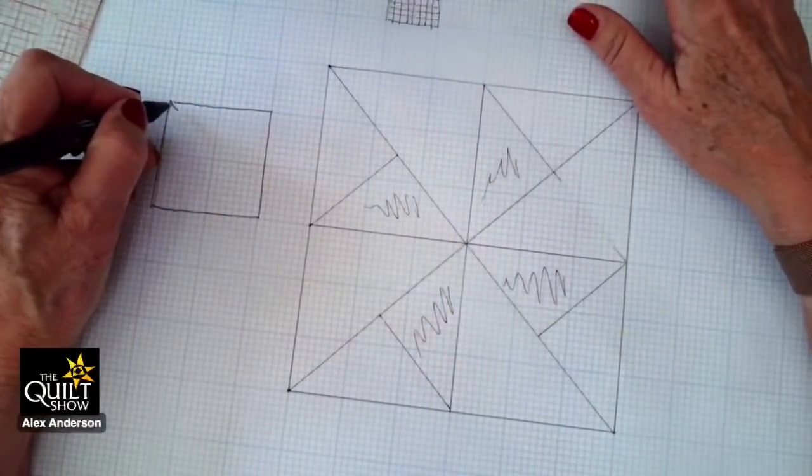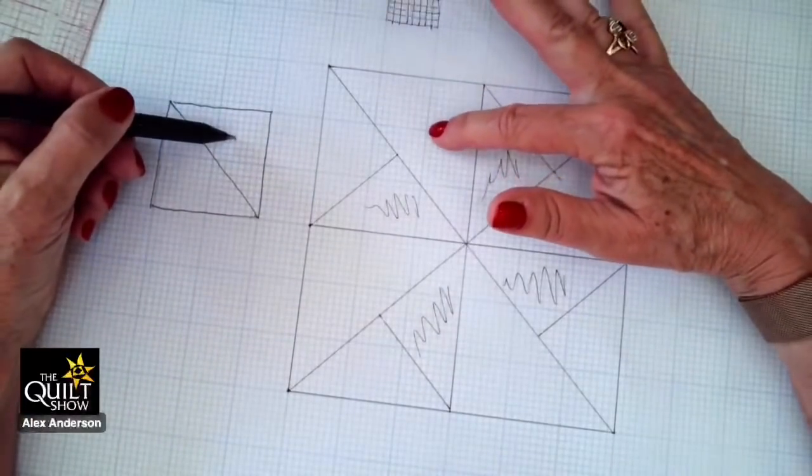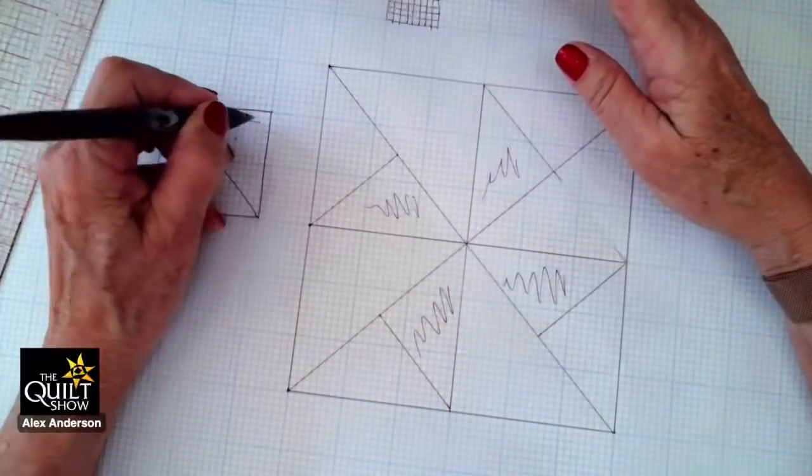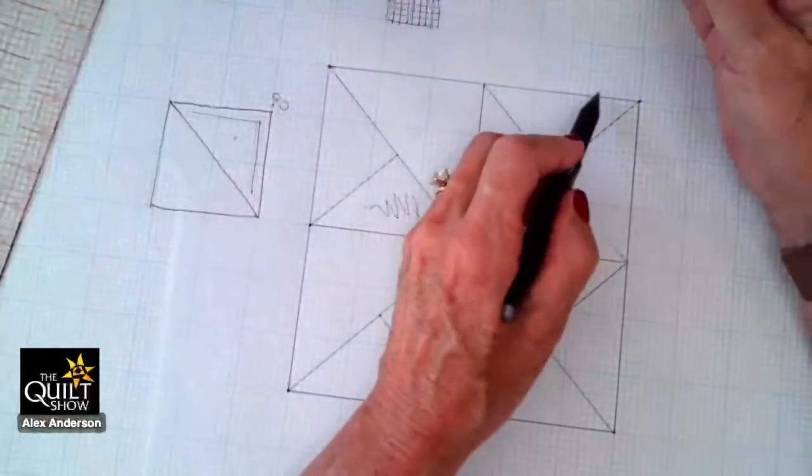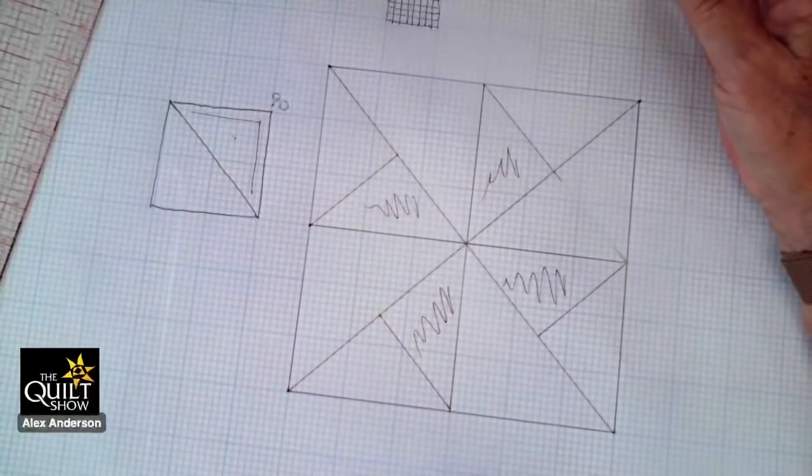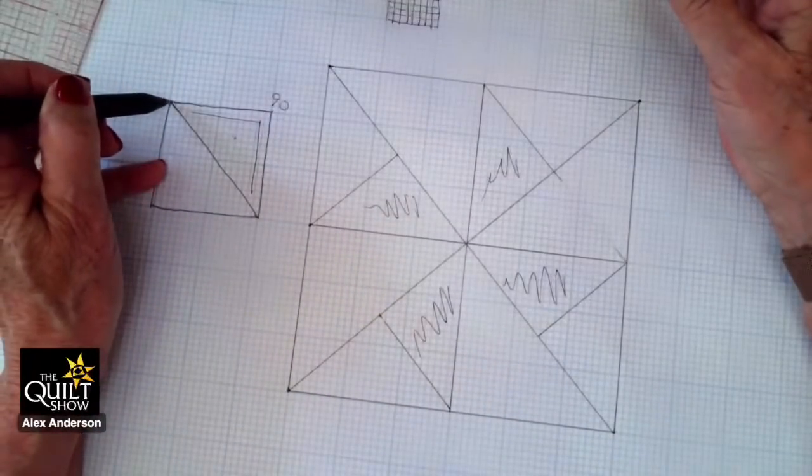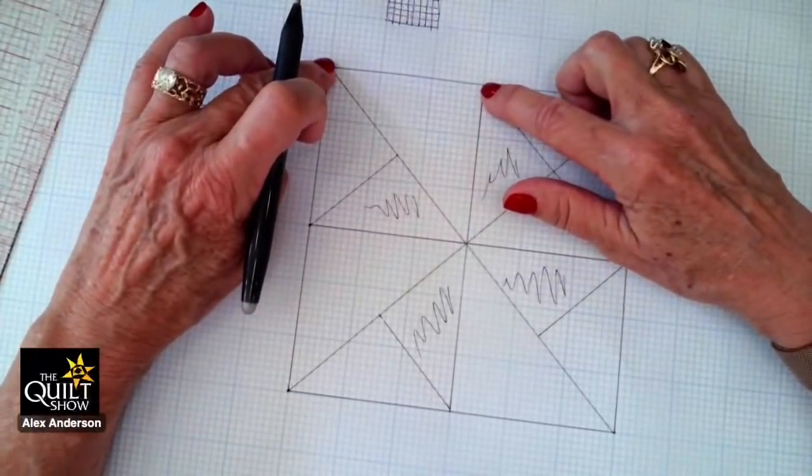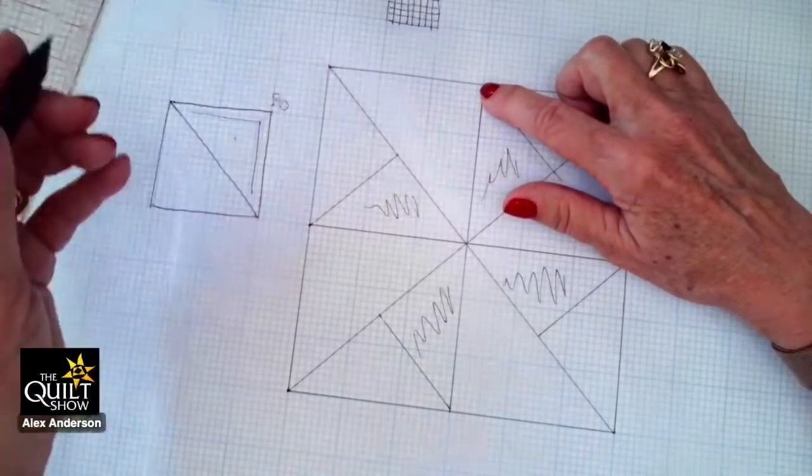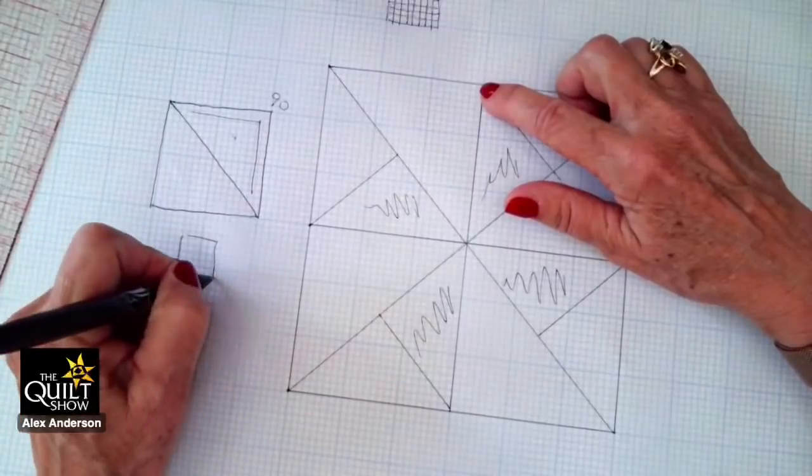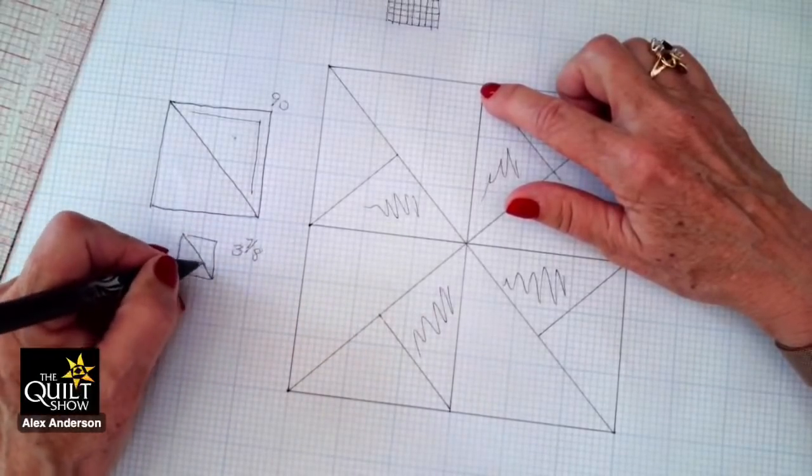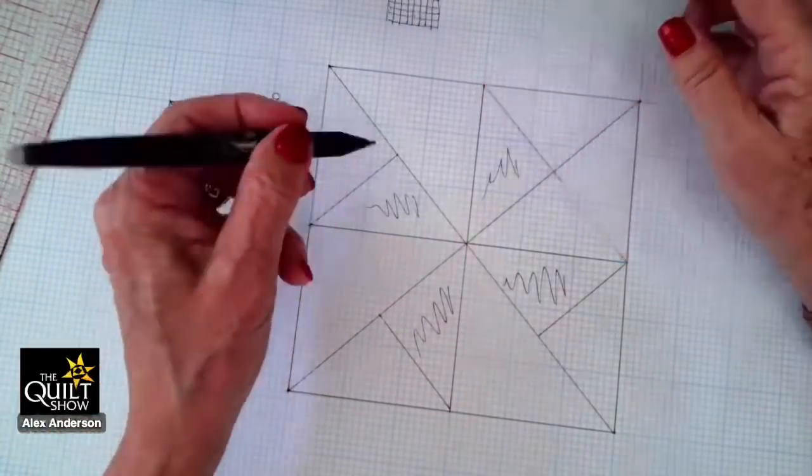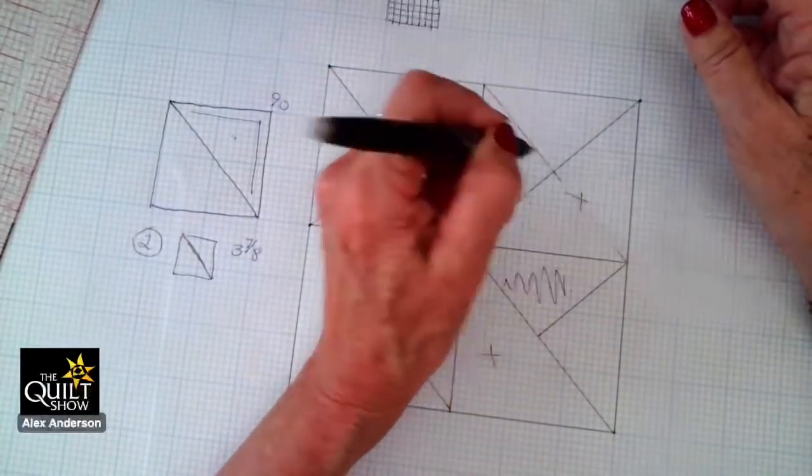This is a half square triangle. Same thing. I want this to be a half square triangle because I want this on the straight of grain. Here's your 90. I always want the outside of the block on a straight of grain. When you're doing a half square triangle, you take the finished measurement. We happen to know it's three here. And you add seven eighths. So I would cut this at three and seven eighths and then cut it corner to corner. I would do that two times. And then I've got one, two, three, four.